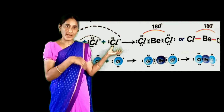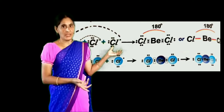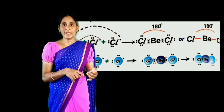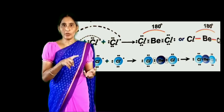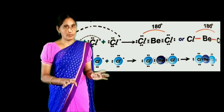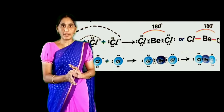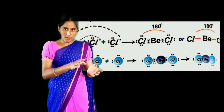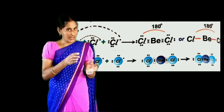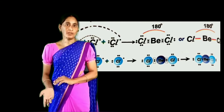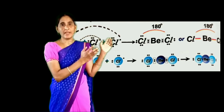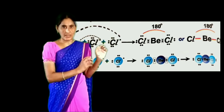The repulsion occurring in methane, ammonia, and water molecules is due to bond pair–bond pair repulsion, bond pair–lone pair repulsion, and lone pair–lone pair repulsion. All of this is explained by VSEPR theory.